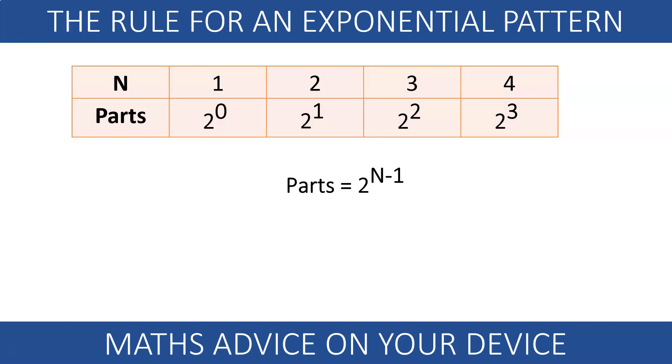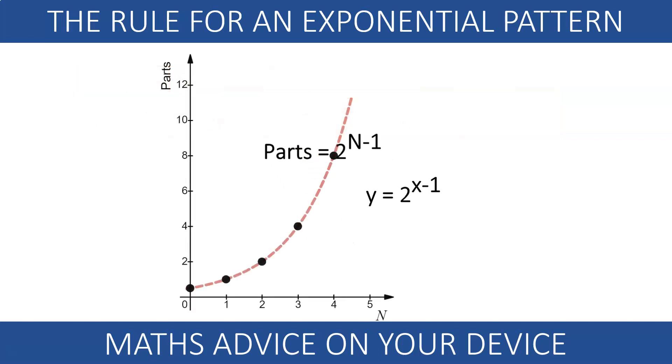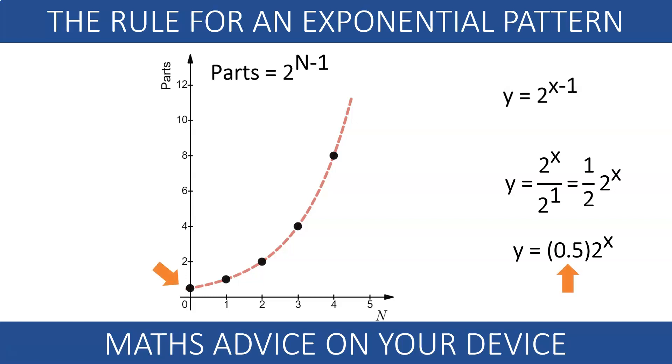We can visualize this using the function y equals 2 to the power of x-1. This equation can be rewritten as 2 to the x over 2 to the 1 using the rules for indices in reverse. This is equal to 0.5 times 2 to the x. It crosses the y-axis at 0.5 and it doubles as we increase x. It also halves as we decrease the exponent.